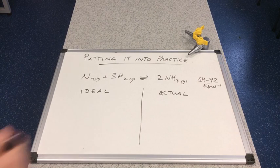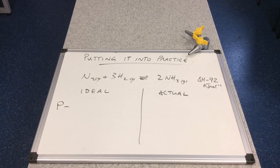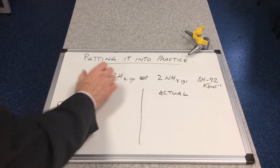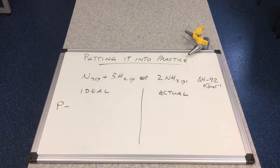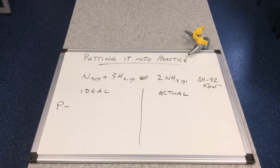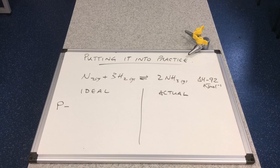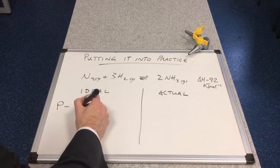So we'll start with pressure. What kind of pressure will give us lots of product? Which pressure would favor the forwards reaction? Remember that's all about the number of moles. We've got four moles on the left, one mole of nitrogen, three moles of hydrogen versus two moles of ammonia. So what kind of pressure favors the smaller side? It's a high pressure.